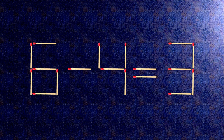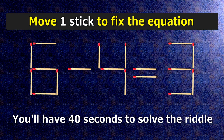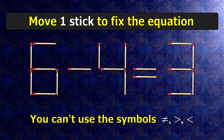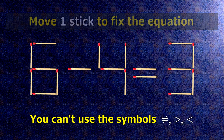We have the equality 6 minus 4 equals 3. Our equality is wrong. We need to move one match to make our equality correct.